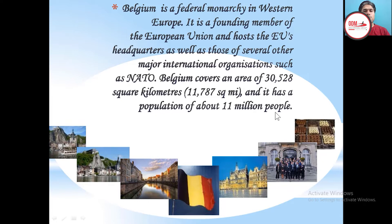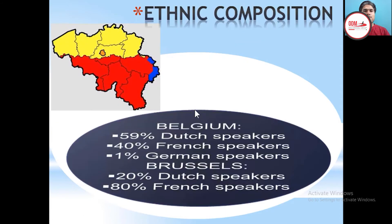Belgium has a population of about 11 million people. This is very important, because while discussing power sharing and how Belgium accommodated its people, this population is a key factor. The ethnic composition of Belgium shows how society was divided: 59 percent of the people were Dutch-speaking and 40 percent were French-speaking.